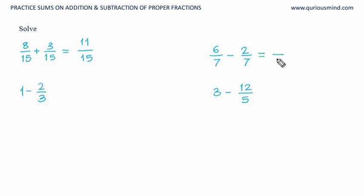Again, denominator is same, so we will keep denominator as it is and we will perform operation on the numerator. 6 minus 2 is 4, so the answer is 4 upon 7. Now here, 1 minus 2 upon 3.